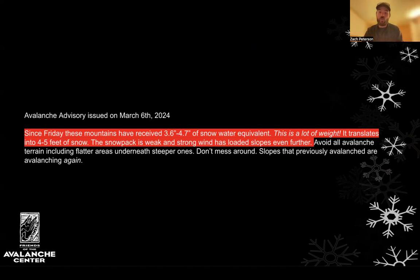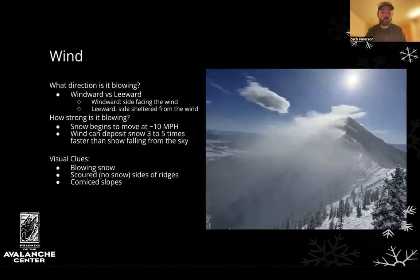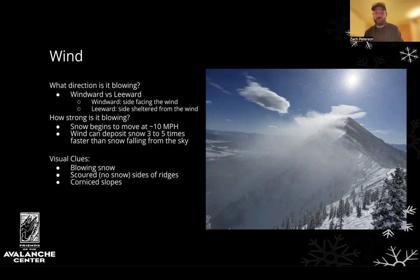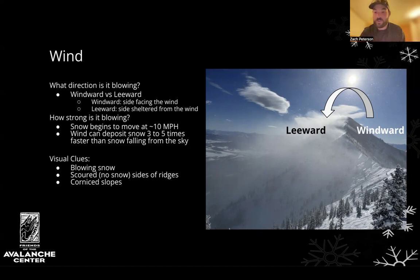The next red flag is wind. Wind direction can help us understand where recent snowfall is being blown to, and ridgelines are great indicators of this. One side may be scoured — called the windward side, or the side facing the wind — and the other side will be covered in snow, called the leeward side, or the sheltered side.